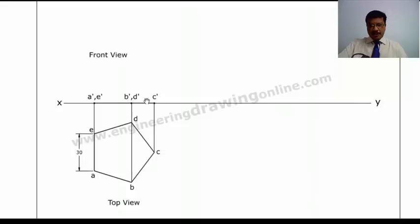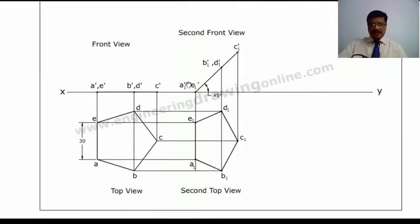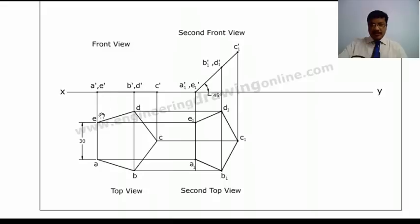After simple position, you have to represent the surface inclination in the second stage. I am going to the second stage, representing the surface inclination. I have tilted the surface to 45 degrees. Then I am drawing the projectors from the front view and locus lines from the previous top view. The reduced shape of the surface is seen in the top view — this is the second top view. Since the edge inclination is given, I kept this edge perpendicular to VP from the first stage onwards, so this edge perpendicularity is shown in the second stage also.